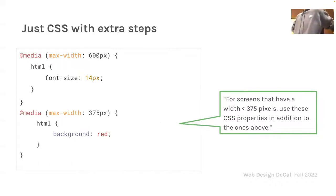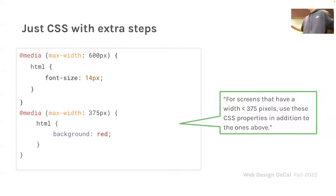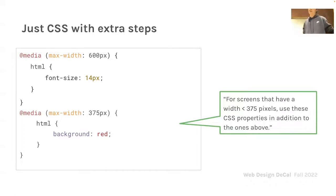Here's another example with nesting. If you want a super small screen to have something and a medium-sized screen to have something else, a screen less than 375 pixels would inherit both properties since it satisfies both media queries. A screen with 400 pixels would not have a red background and only have a font-size of 14.